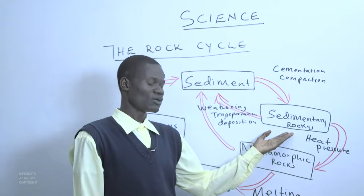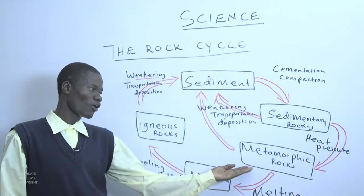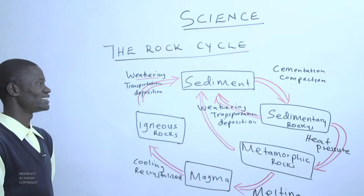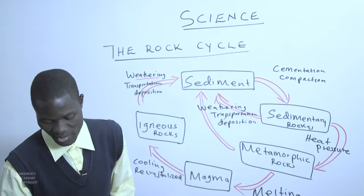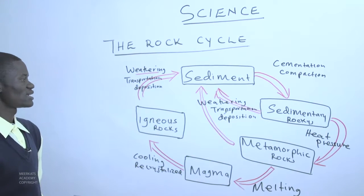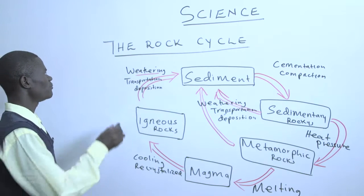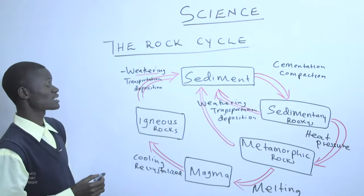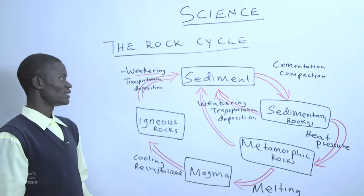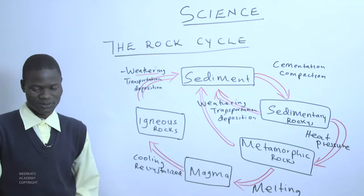When these sediments undergo cementation and compaction, they will eventually lead to the formation of sedimentary rocks. And thereafter, sedimentary rocks will be subjected to great heat and pressure and result in the formation of metamorphic rocks. This is our rock cycle. Erosion may also work — we discussed weathering and erosion previously — and this is what we call the rock cycle.